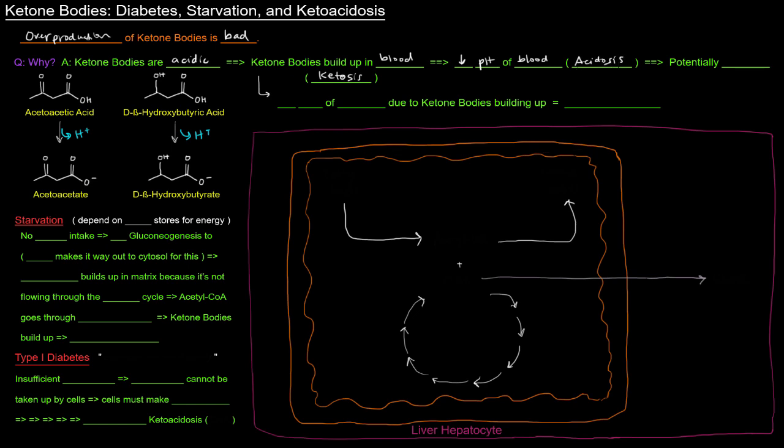And that is really bad. That's potentially fatal. That can kill people. Now, so a decrease in the pH of the blood, that's acidosis. Ketone body buildup, that's ketosis. Now a decrease in the pH of the blood due specifically to ketone bodies building up, that's called ketoacidosis, just a combination of ketosis and acidosis.